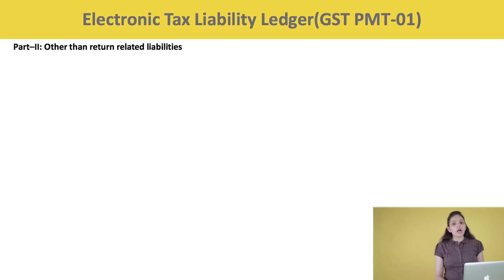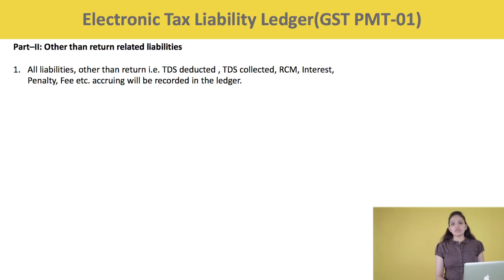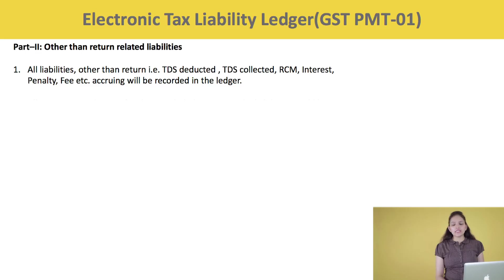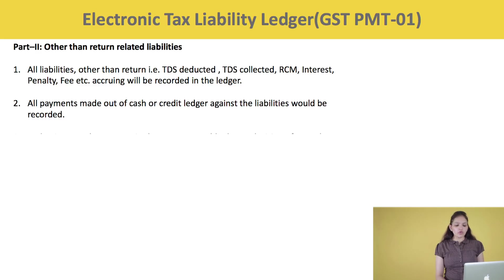The second part of the Electronic Tax Liability Ledger is for other than return-related liabilities. All liabilities other than return i.e. TDS deducted, TCS collected, reverse charge, interest, penalty, fee, etc. accruing will be recorded in this ledger. All payments made out of cash or credit ledger against these liabilities would also be recorded in this part.